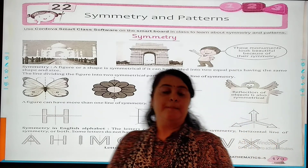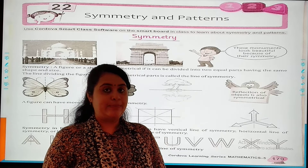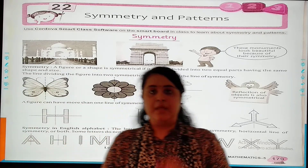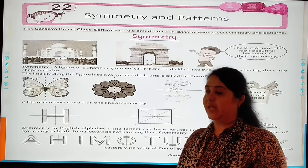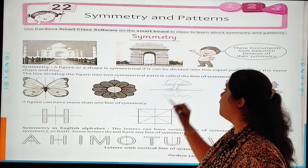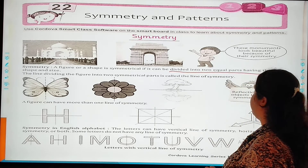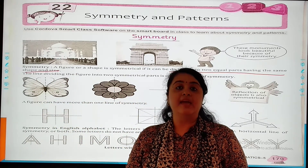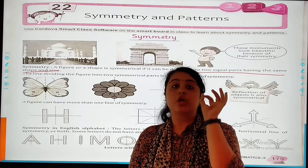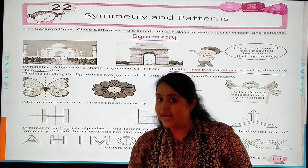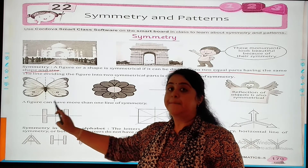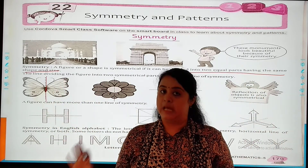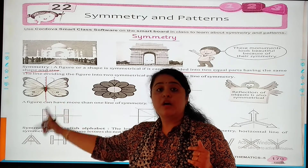Please open your textbook on page 179. What do you mean by symmetry? Here is the proper meaning given. Let's read together: a figure or shape is symmetrical if it can be divided into two equal parts having the same shape and size. We will judge on the basis of shape and size. If I divide one figure — for example, this is a butterfly — and divide it into two parts along the middle, then both sides will have the same shape and size. Then I can say that this figure is a symmetrical figure.